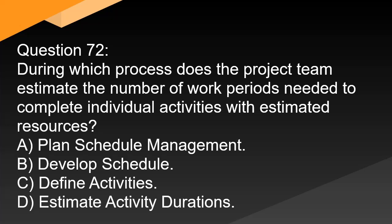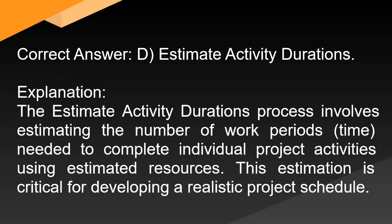Question 72: During which process does the project team estimate the number of work periods needed to complete individual activities with estimated resources? A. Plan schedule management. B. Develop schedule. C. Define activities. D. Estimate activity durations. Correct answer: D. Estimate activity durations. Explanation: The estimate activity durations process involves estimating the number of work periods (time) needed to complete individual project activities using estimated resources. This estimation is critical for developing a realistic project schedule.